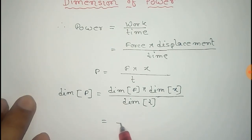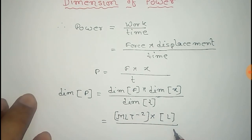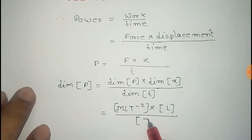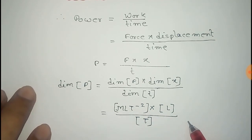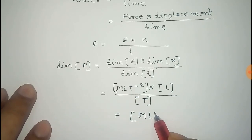Now the dimension of force is given by MLT to the power minus 2. Dimension of displacement is L and dimension of time is capital T. And that equals ML square T to the power minus 3.